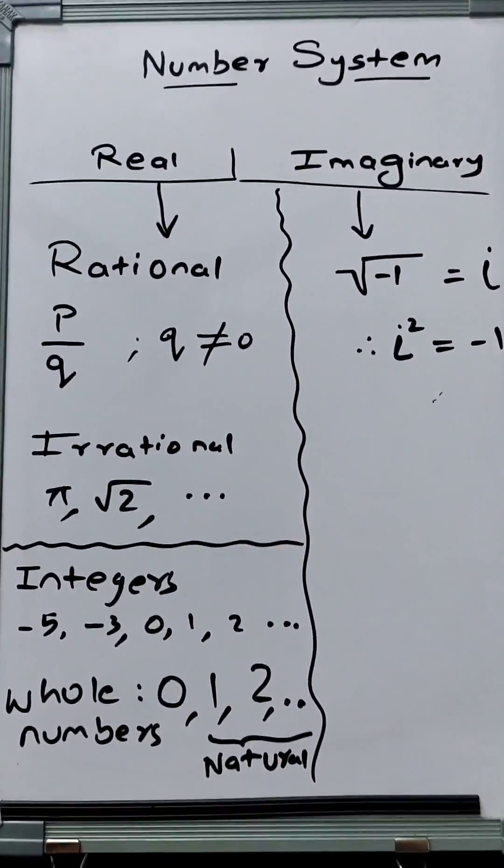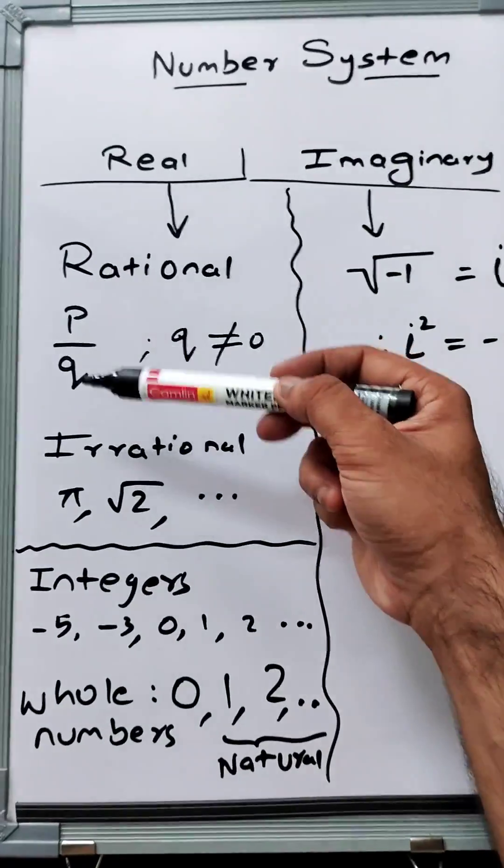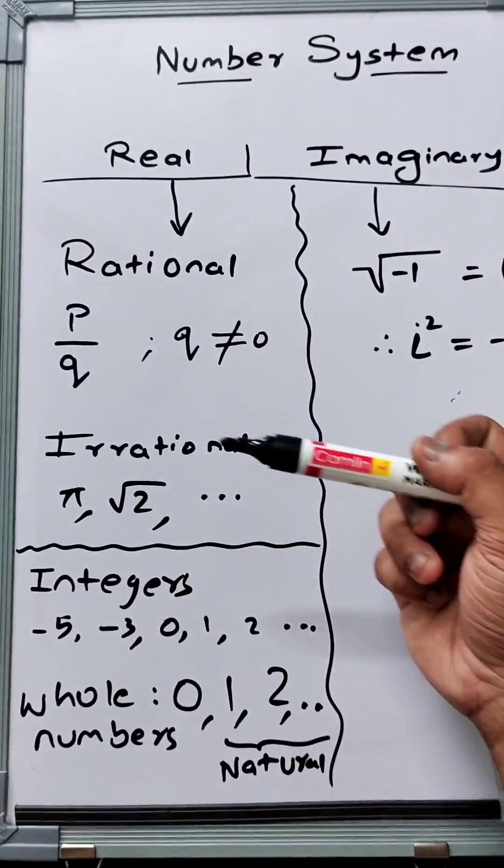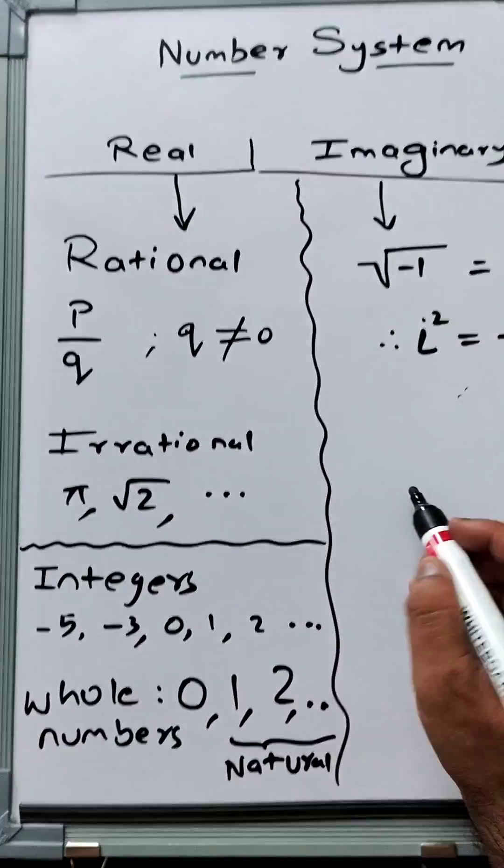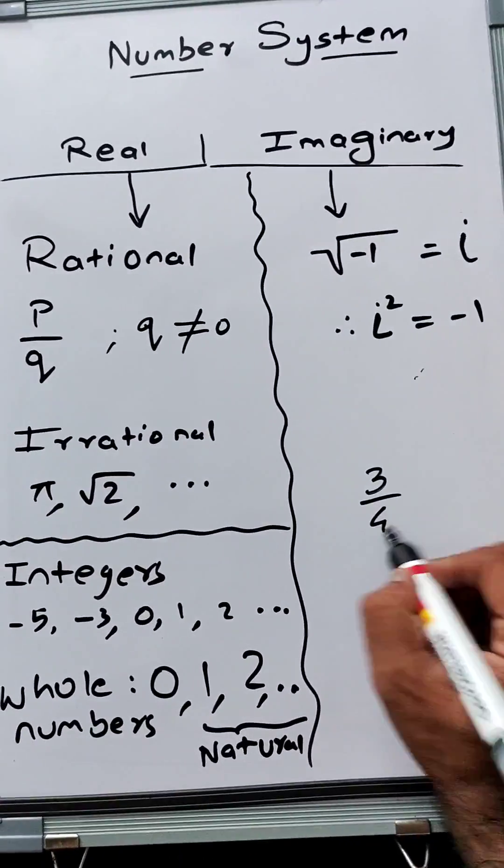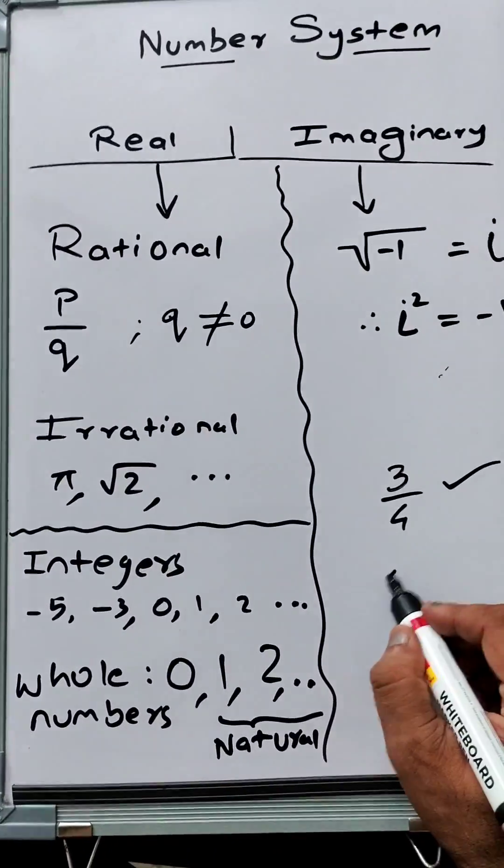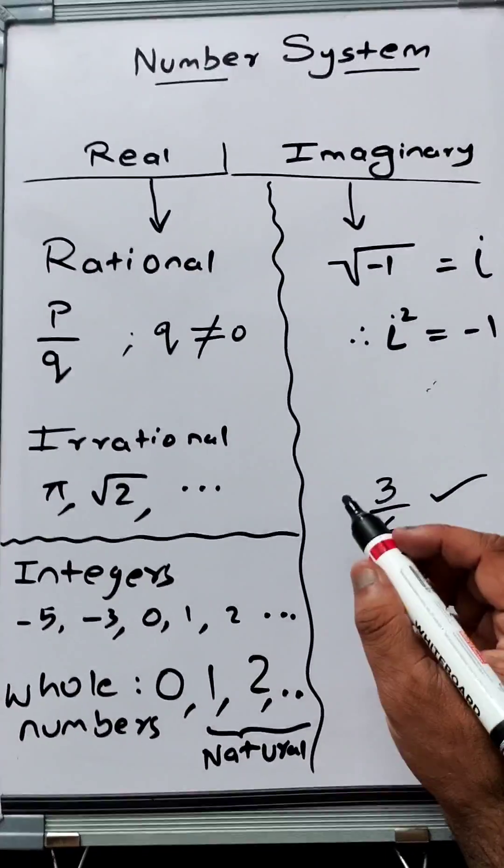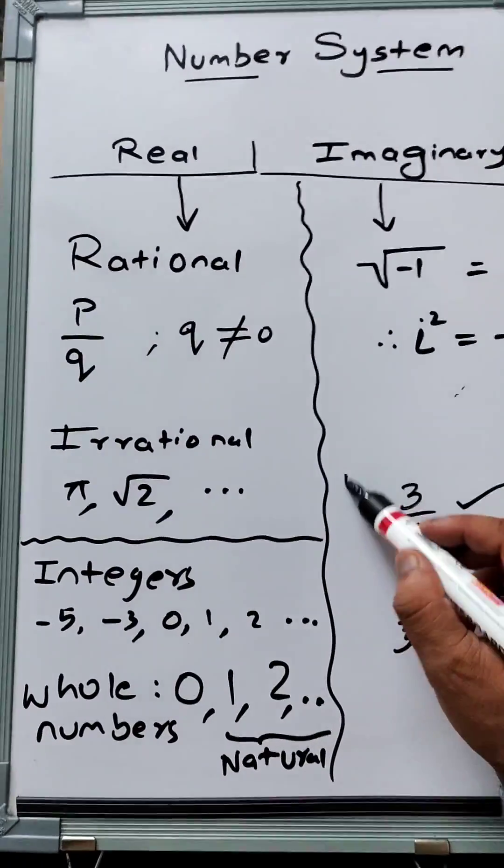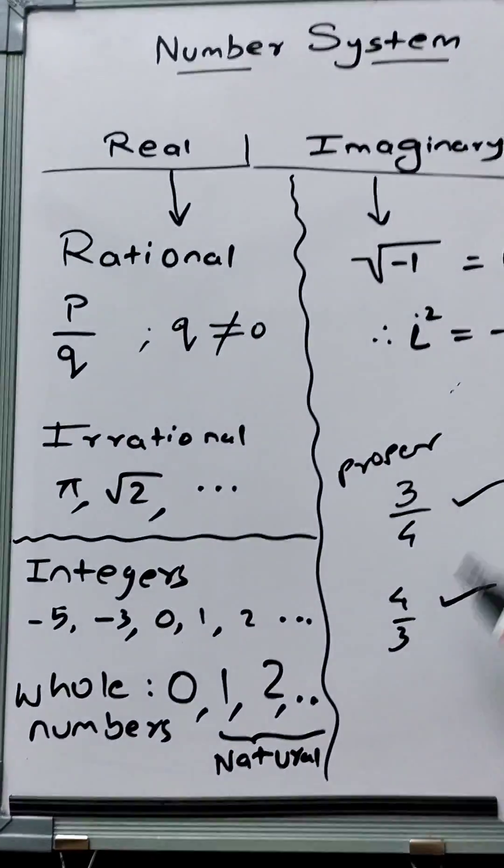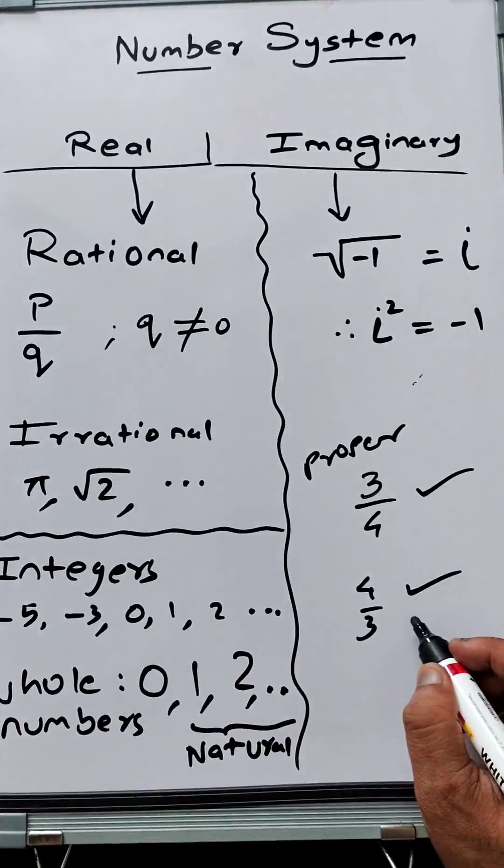If I exclude zero, it becomes natural numbers. Rational numbers are the ratio of two integers p by q, so 3/4 is a rational number. 4/3 is also a rational number. The difference is this is proper because the value will be less than one, and this is an improper rational number because the value will be more than one.